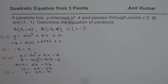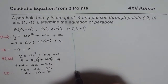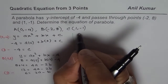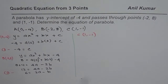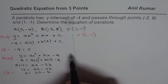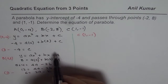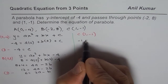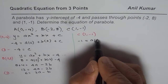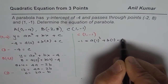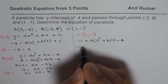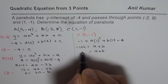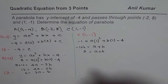Now let's find another equation using point C, which is 1, minus 1. Substituting y equals minus 1 and x equals 1 into our equation with C as minus 4, we get minus 1 equals A times 1 squared plus B times 1 minus 4. Bringing minus 4 to the left: minus 1 plus 4 equals A plus B, so A plus B equals 3. Let's call this equation 3.